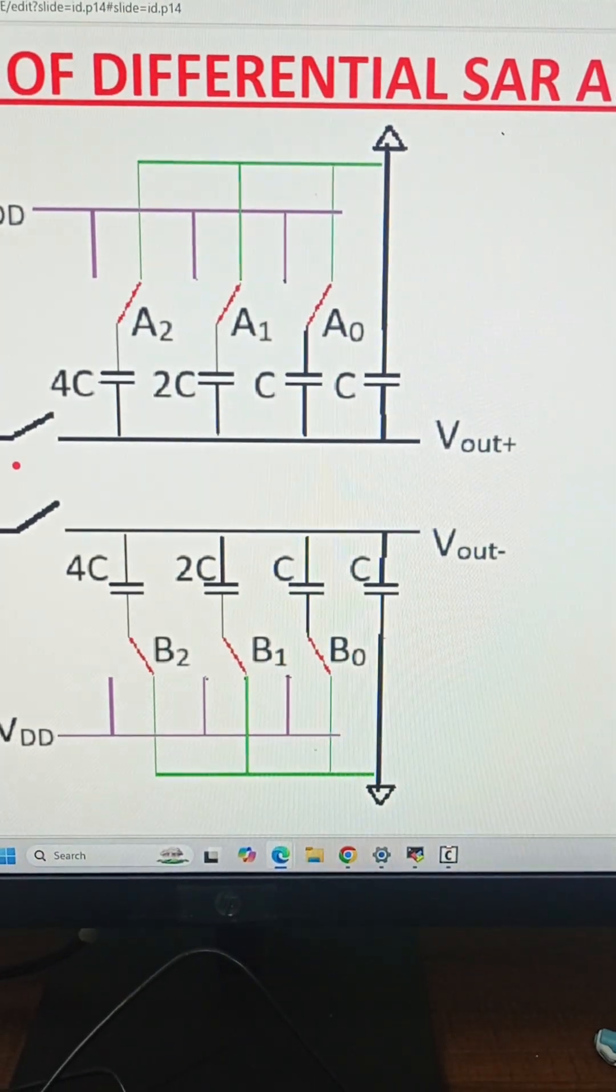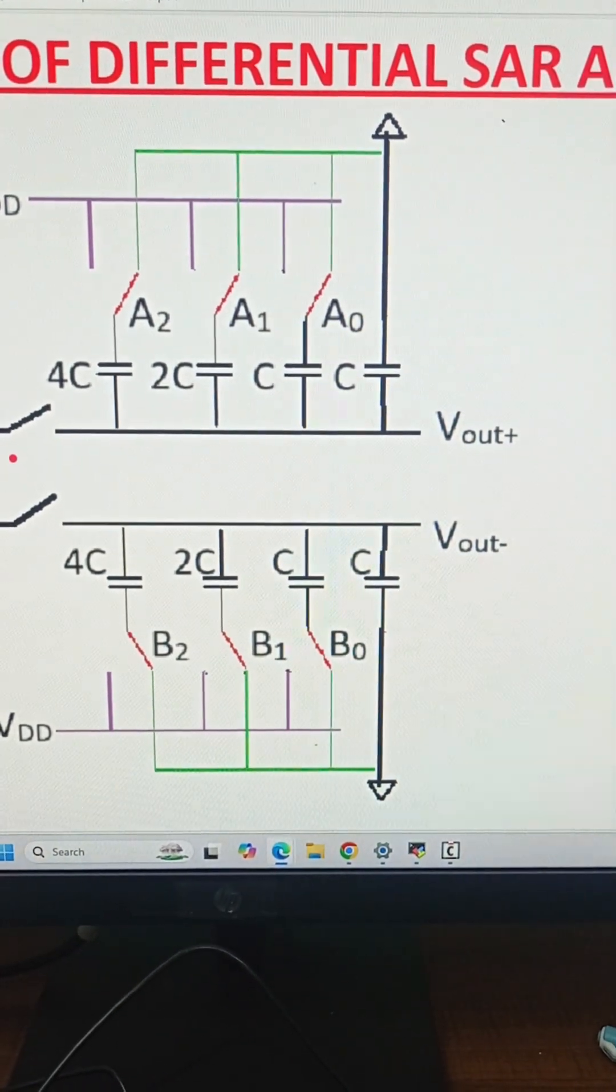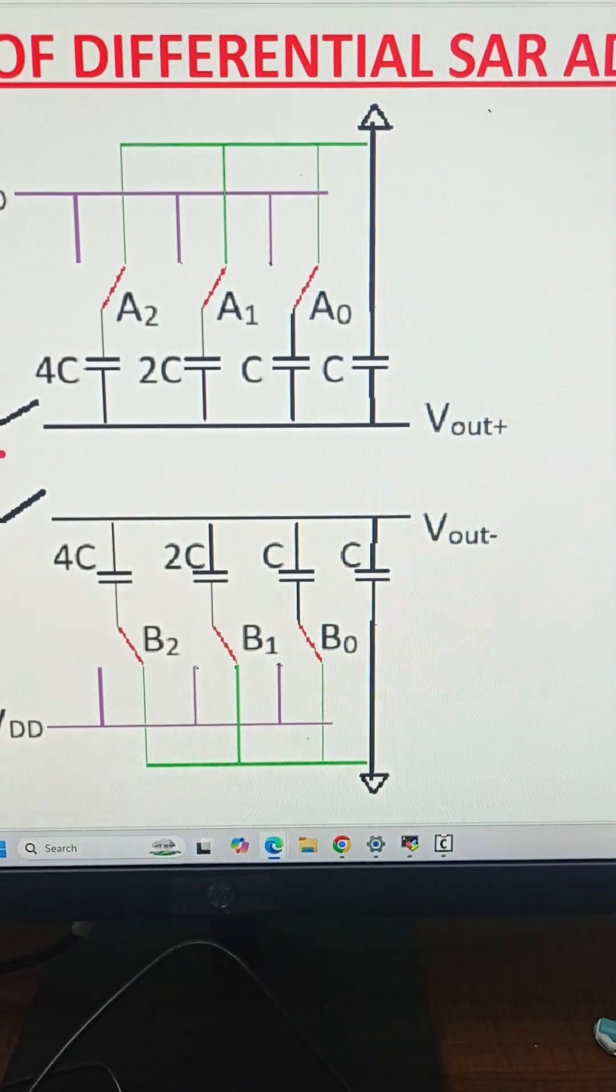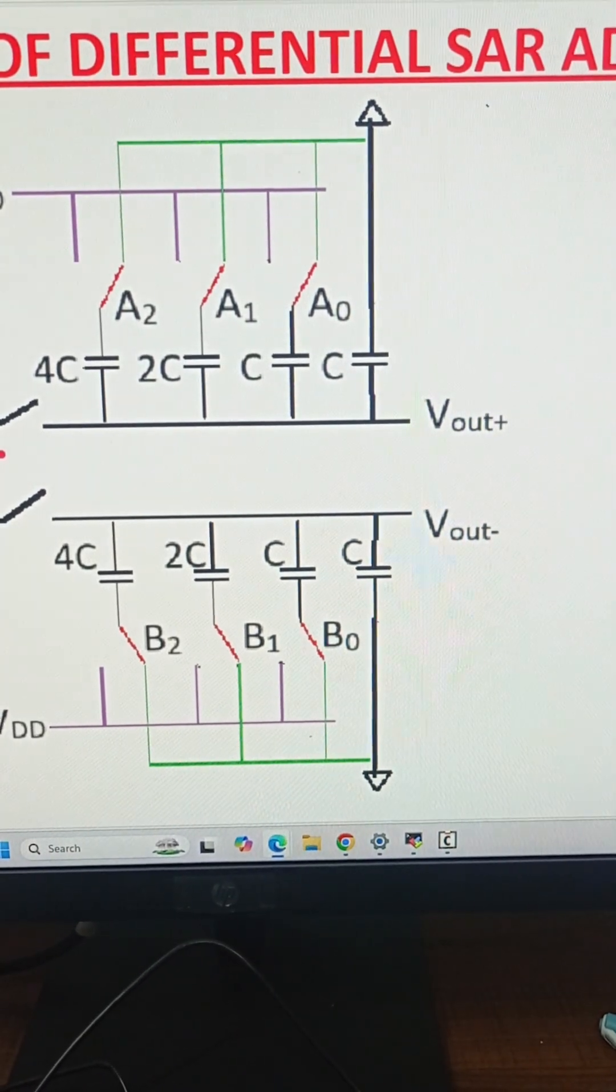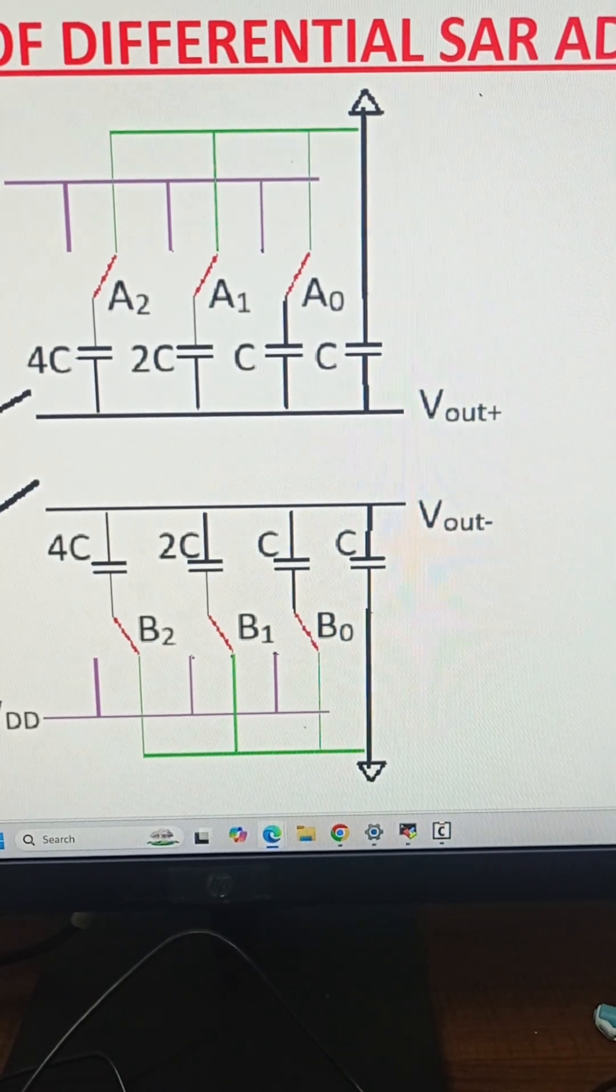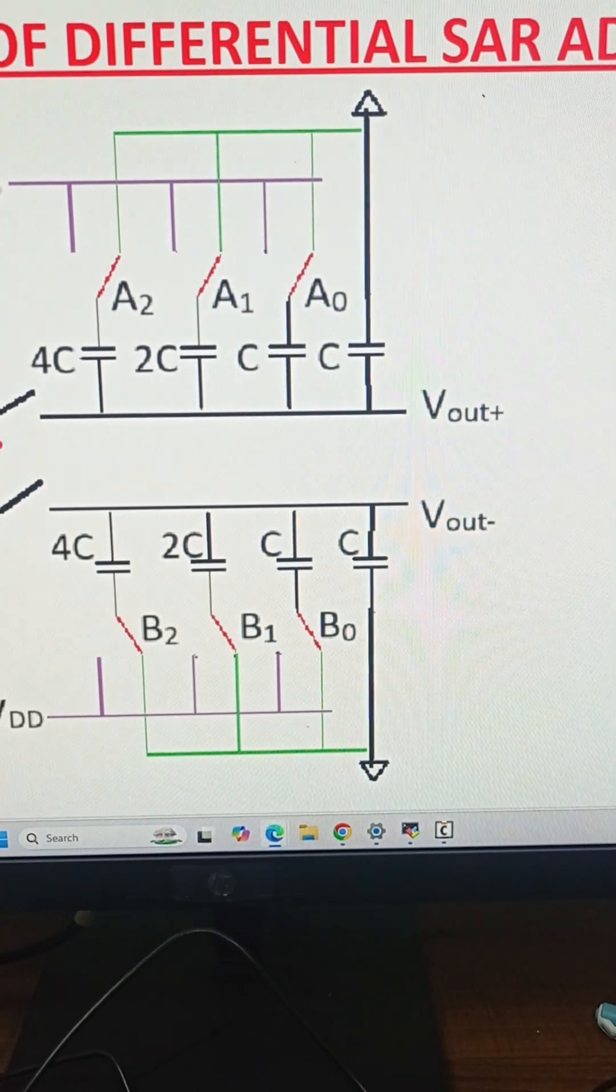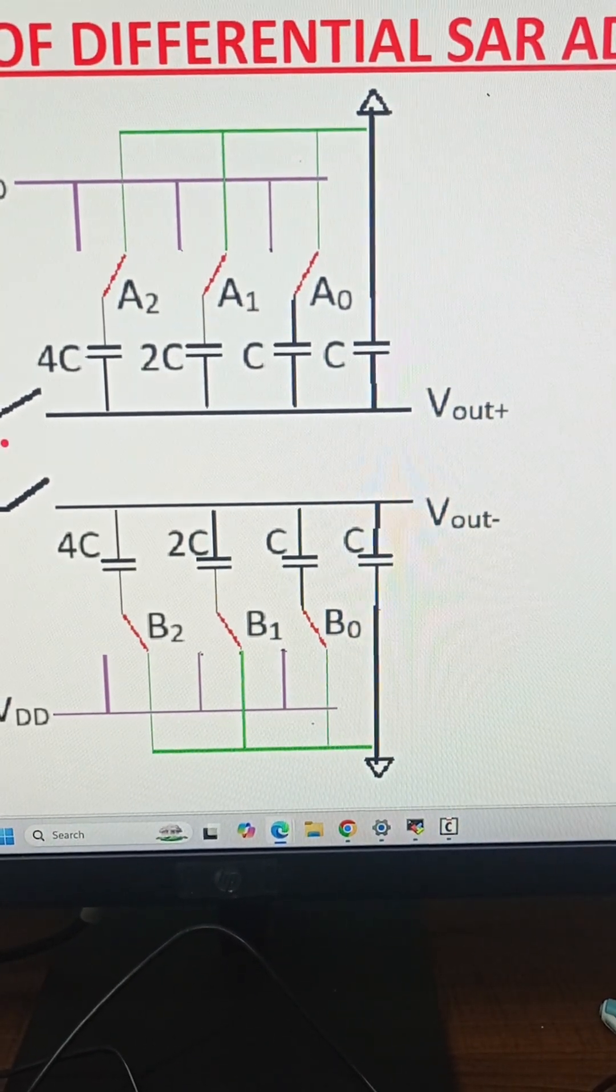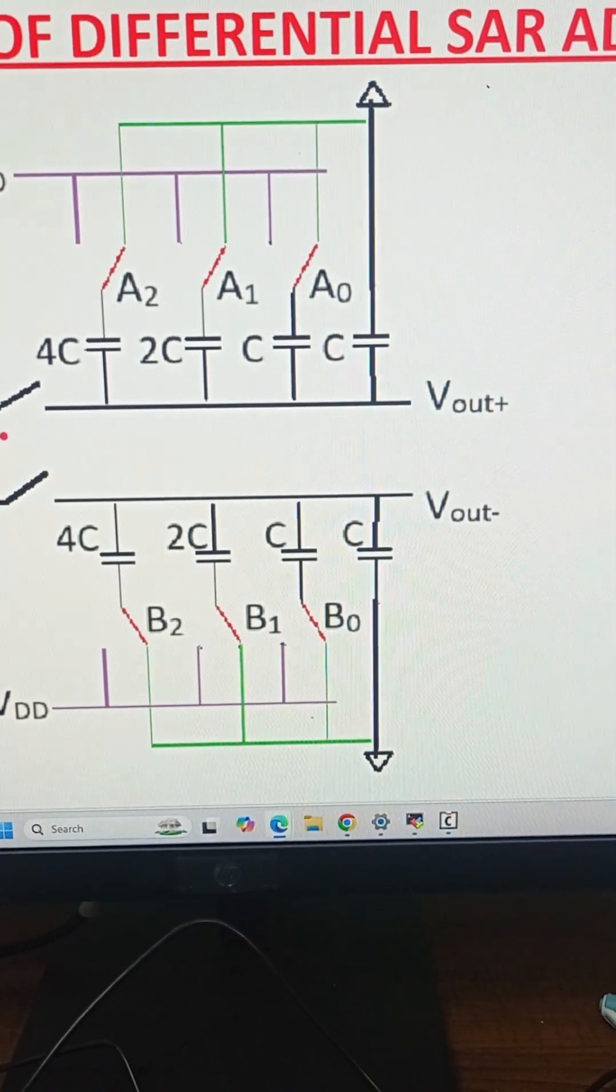The third comparison again resolves the third bit as 0. Now finally A0 will be switched to V_DD because V_out+ is less than V_out-. V_out+ will now increase by 0.125 volts, and the new value of V_out+ becomes 0.975 volts.